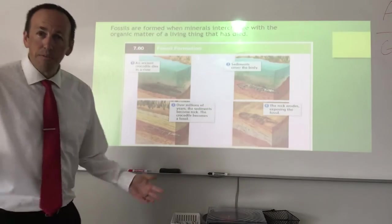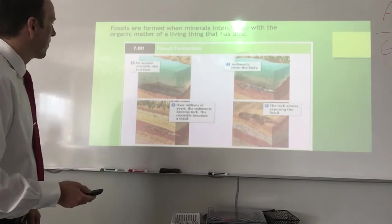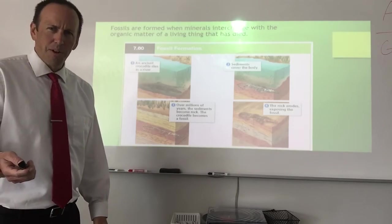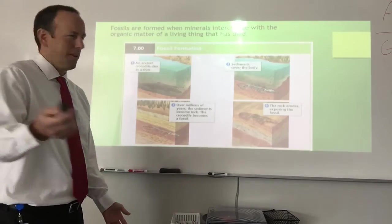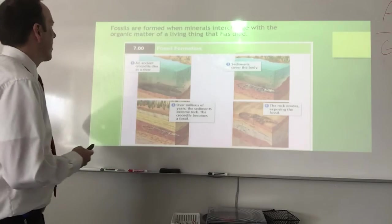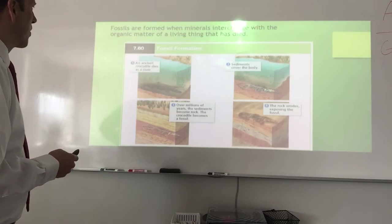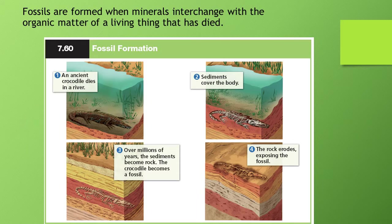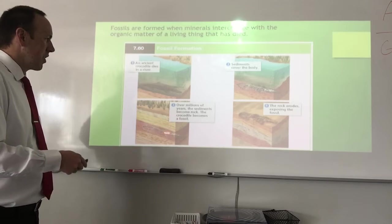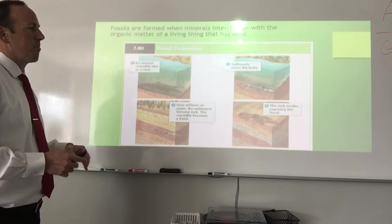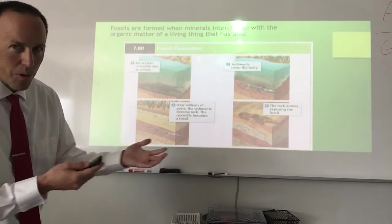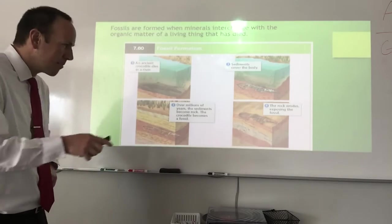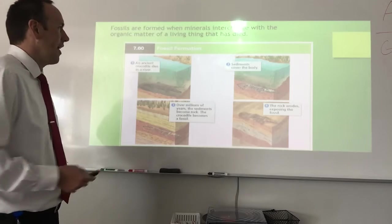How does a fossil get formed? Fossils are formed when minerals are interchanged with the organic matter of a living thing that has died. Here's the crocodile — it's dead, turned to bones, and then over millions of years it gets infused with minerals and basically becomes sort of like a rock. It becomes hard and fossilized.